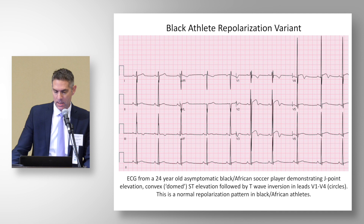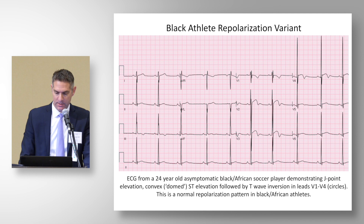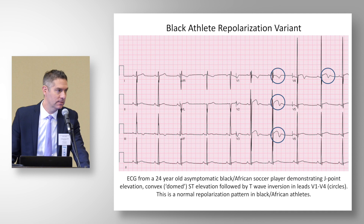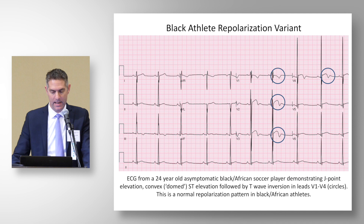There is a repolarization variant present in Black athletes or athletes of African Caribbean descent. The ST segment elevation and T wave inversion is confined to leads V1 through V4. For this pattern, there is J point elevation, a convex or domed-shaped ST segment followed by T wave inversion, and that T wave inversion is always confined to leads V1, V2, V3, or V4 — but does not extend beyond V4.